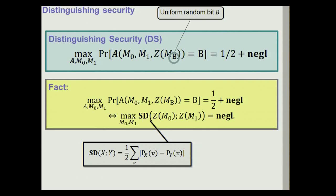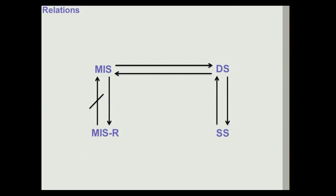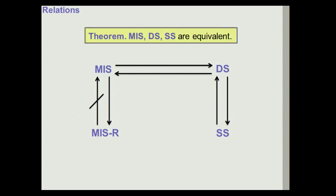Our main result here is to show that all three new ways of defining security — mutual information security, distinguishing security, and semantic security — turn out to be equivalent, while the older notion of mutual information security for random messages is of course not equivalent to mutual information security.